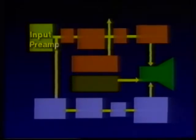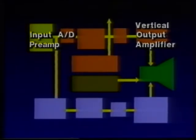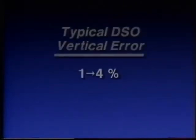The major limiting factors for vertical accuracy in DSOs are the accuracy and linearity of the analog input amplifier, the A-to-D converter, and the analog vertical output amplifier. Because these blocks have analog sections, their performance is limited by the analog characteristics of those sections. DSOs typically have vertical error specifications between one and four percent.